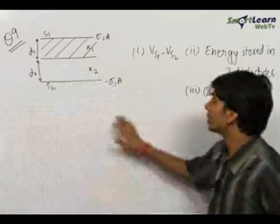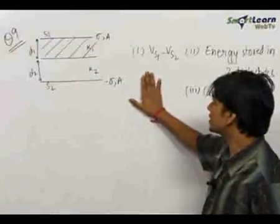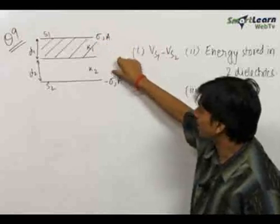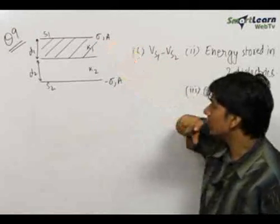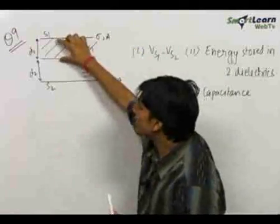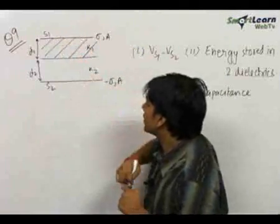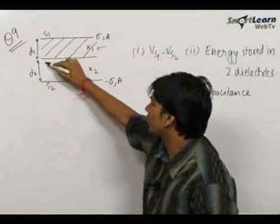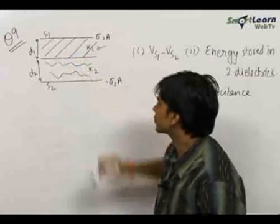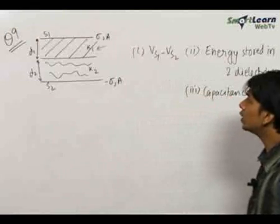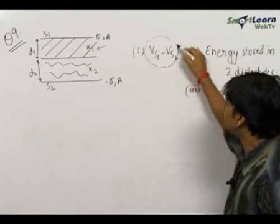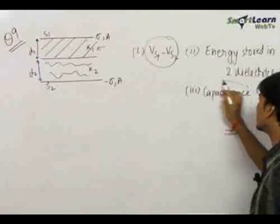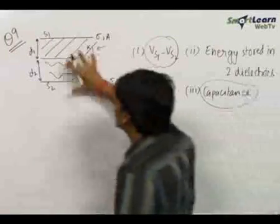This is a very important question. We learn a lot of things from this question. We have two plates of charge density sigma and minus sigma and surface area each of A. Till a distance of d1 there is a material of dielectric constant k1, and over here there is a material of dielectric constant k2. We need to find the potential difference between the two plates, the energy stored in the two dielectrics, and the total capacitance of this system.